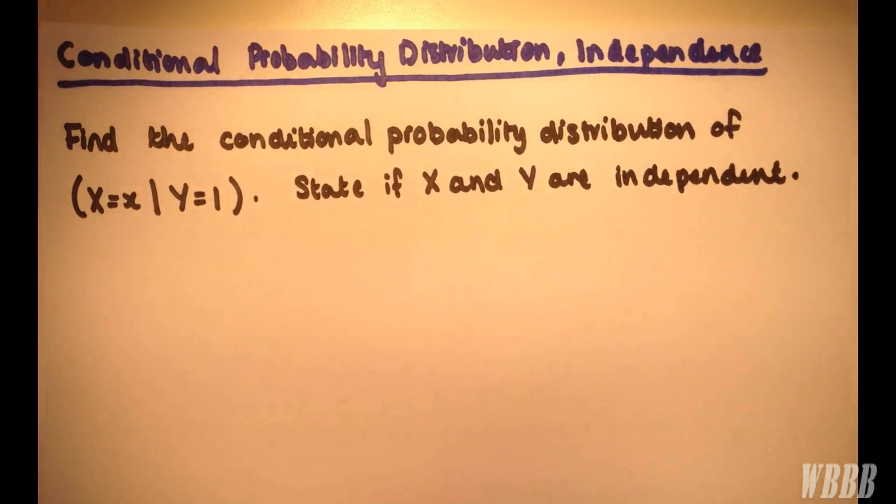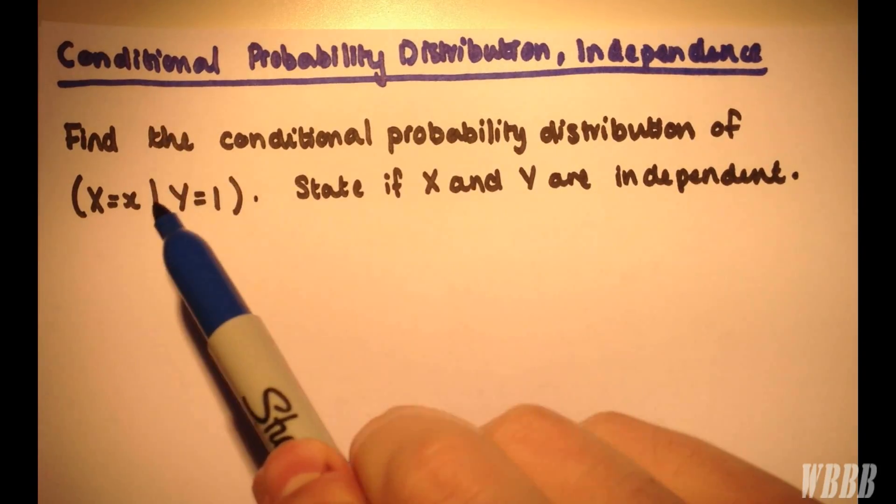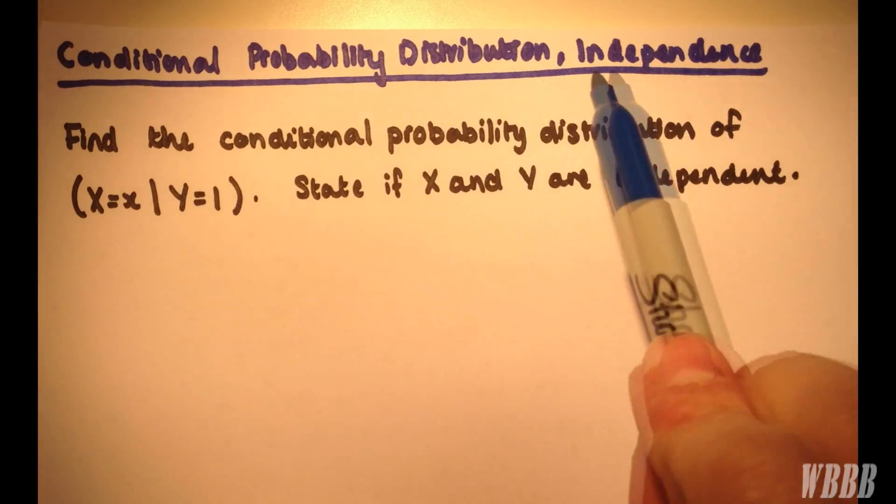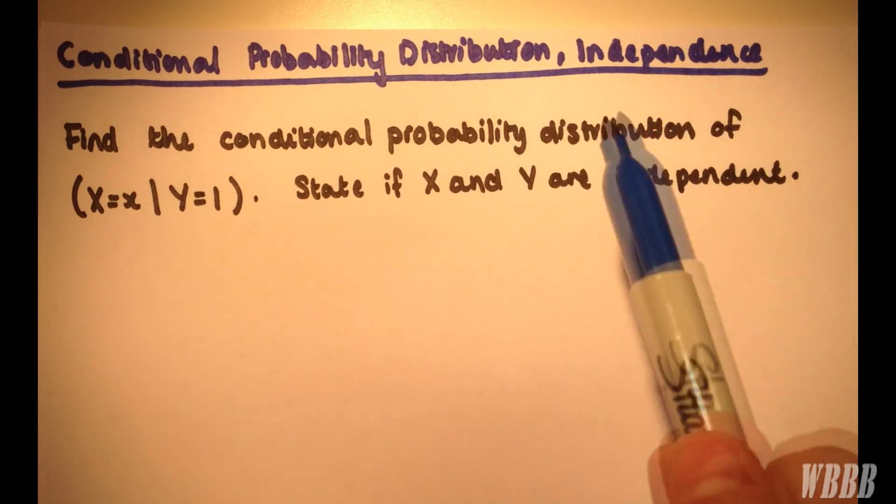Welcome to the second video in the mini-series of joint probability distribution. In this video, I'm going to show you an example where we find the conditional probability distribution and consider the effect of this upon the independence.